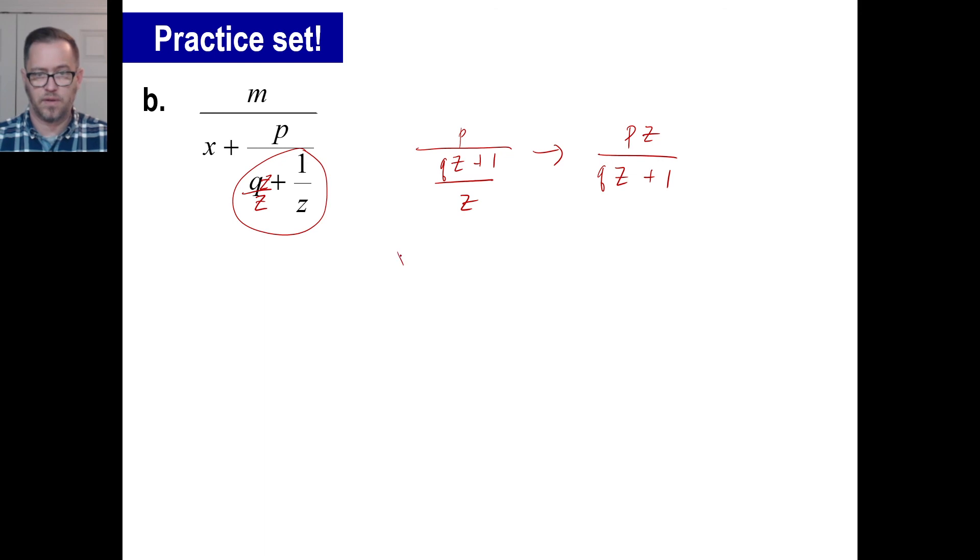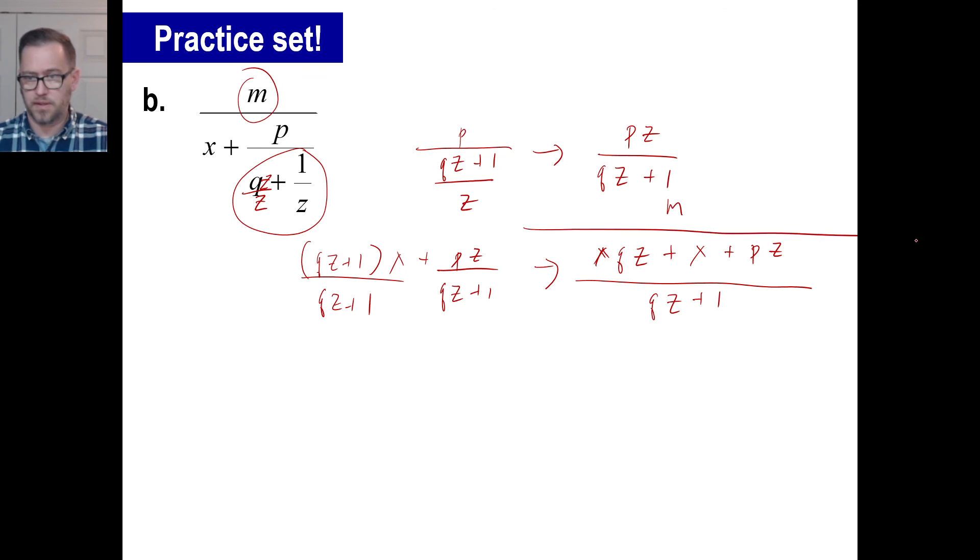Now we have x right here plus PZ over QZ plus 1. And we're going to, of course, multiply top and bottom by QZ plus 1. And we will get X plus XQZ plus X plus PZ all over QZ plus 1. And this is what's going to get divided into M. So M goes on top here. And of course, we've got a big division sign there. And all we need to do is just go ahead and multiply M by this for the numerator and then leave the denominator the same. There's your denominator. XQZ plus X plus P times Z.